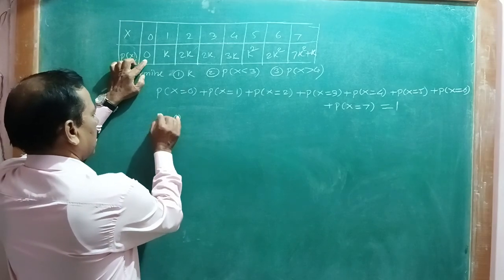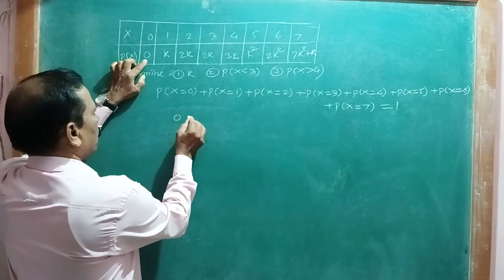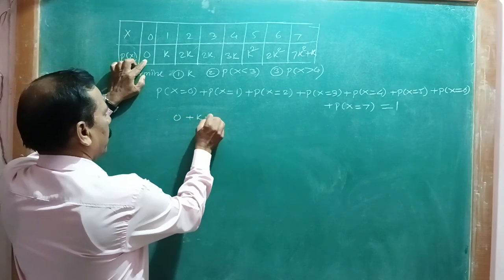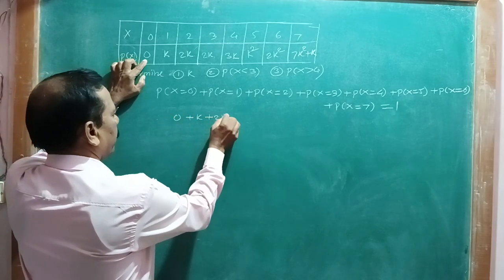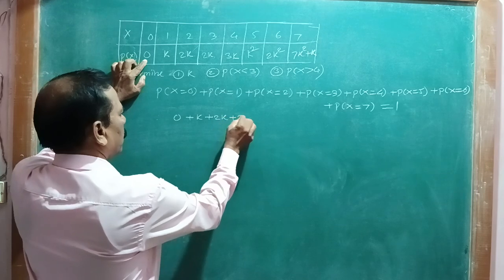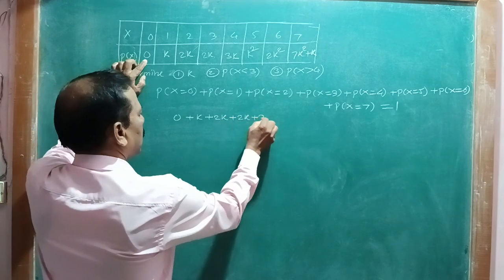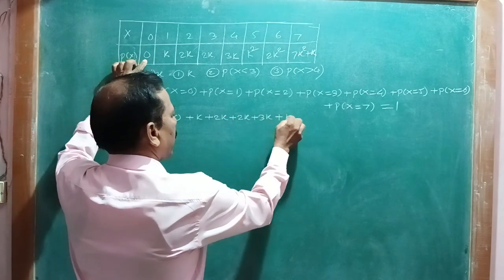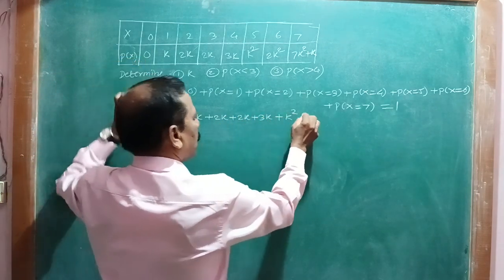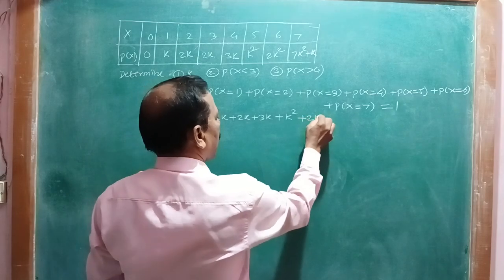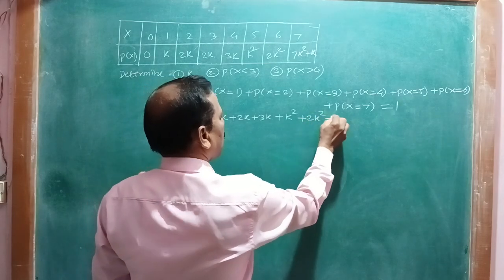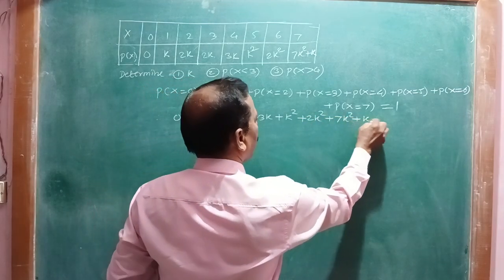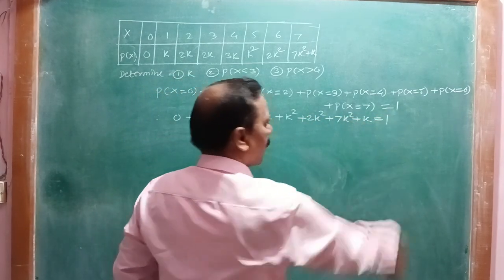Writing out the equation: 0 + k + 2k + 3k + k² + 2k² + (7k² + k) = 1. Collecting terms, this gives 10k² + 9k = 1, so 10k² + 9k - 1 = 0.